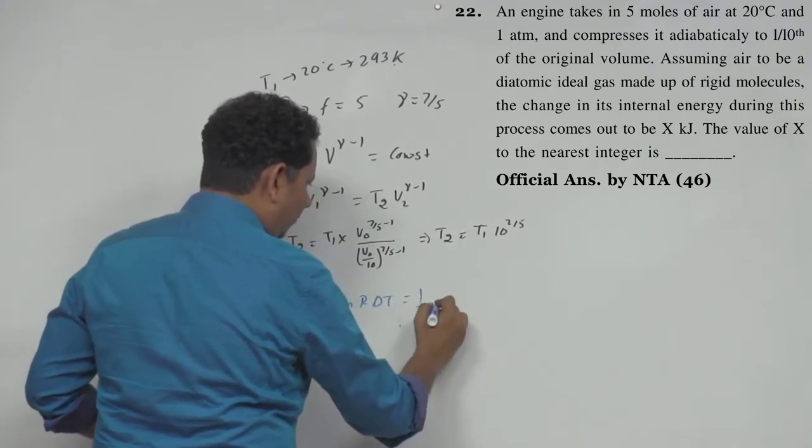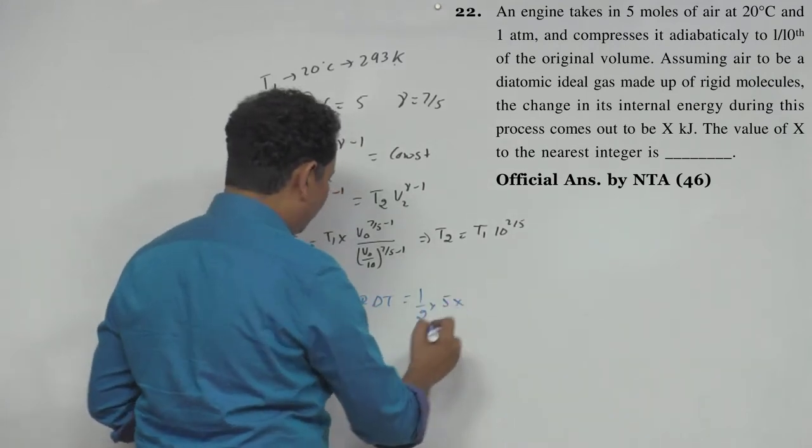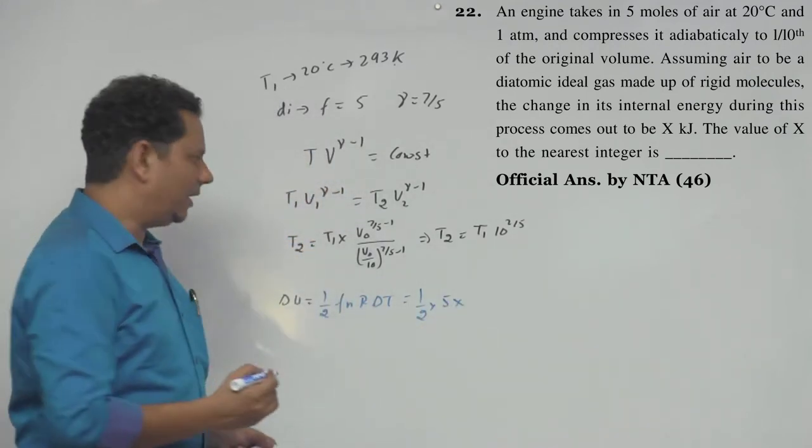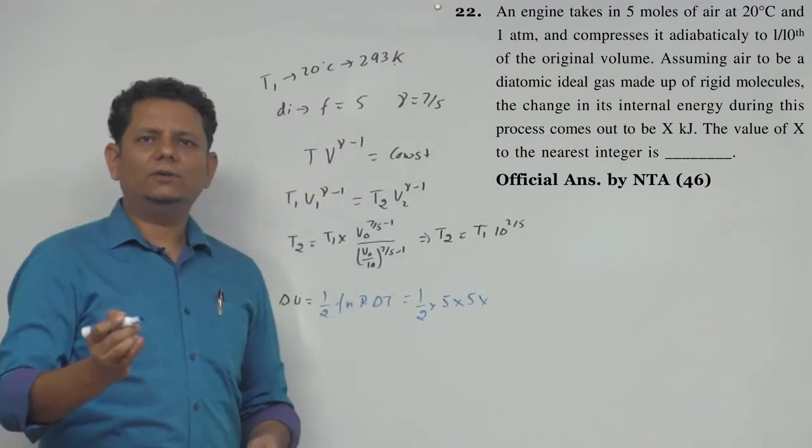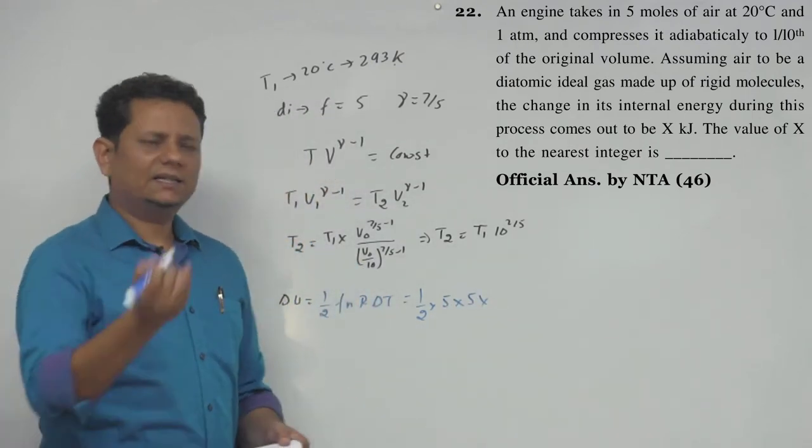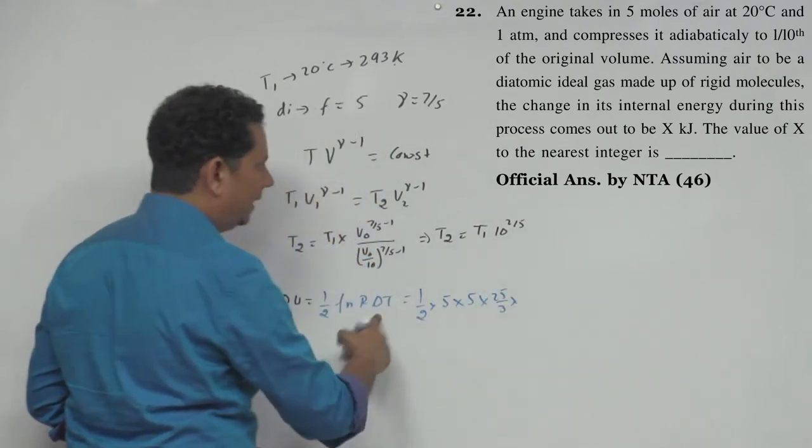The value is (1/2) × 5 (since the gas is diatomic) × 5 moles × R (where R is 8.31 or 25/3) × delta T.